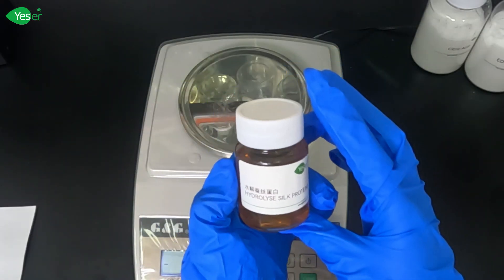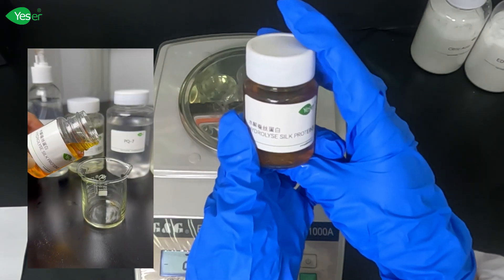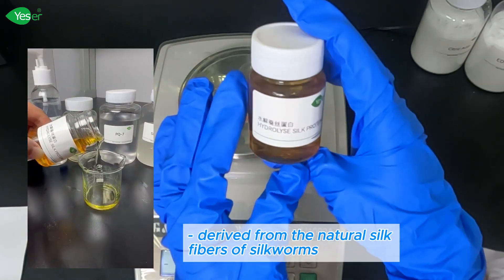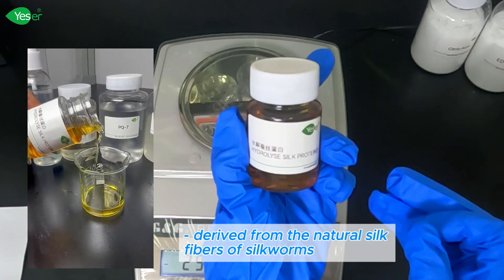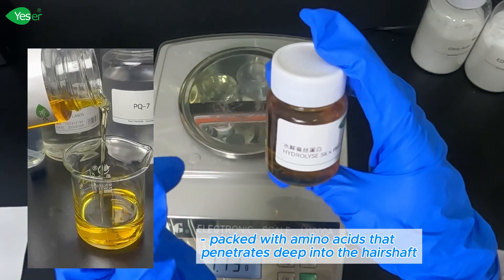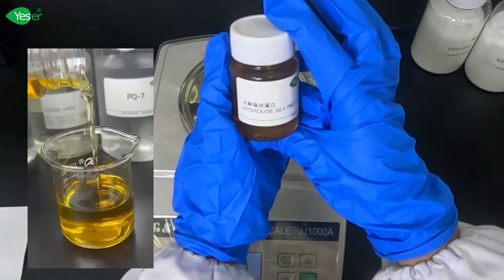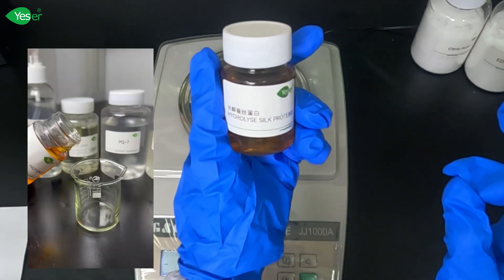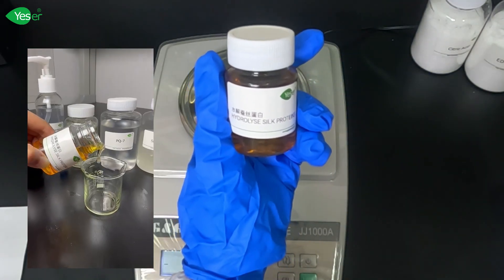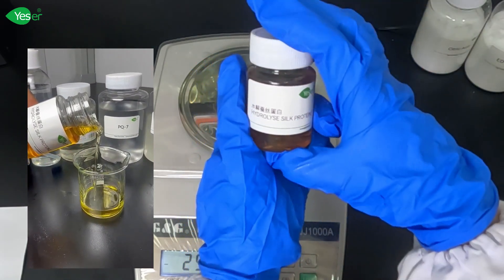Next, we have Hydrolyzed Silk Protein, a luxury ingredient that brings deep nourishment and strength to the hair. Derived from the natural silk fibers of silkworms, it's packed with amino acids that penetrate deep into the hair shaft. This unique protein strengthens the hair from within, adding elasticity and resilience. It also helps retain moisture, giving your hair a natural shine, which is healthy and both soft and supple.